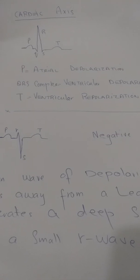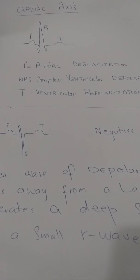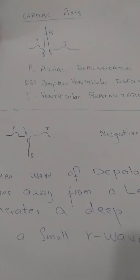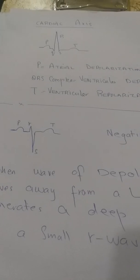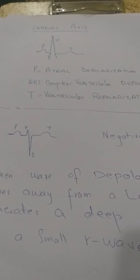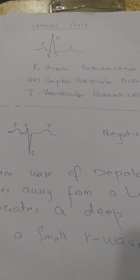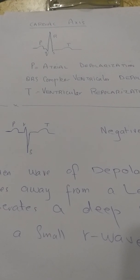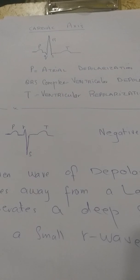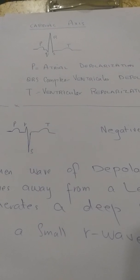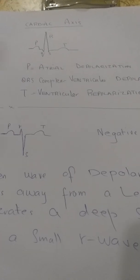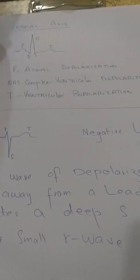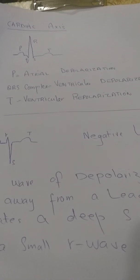By looking at the ECG we can find out the heart axis or the cardiac axis. The cardiac axis tells us in totality in which direction the wave of depolarization of the heart as a whole muscle is actually moving, because there is a concept of having a positive and a negative lead.